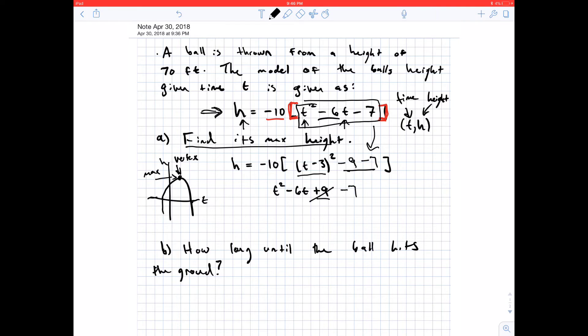And we see that this thing here, we have t squared minus 6t minus 7, which actually matches this. I meant t squared minus 6t minus 7.